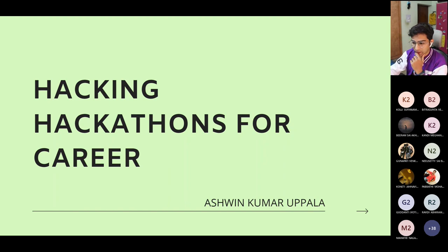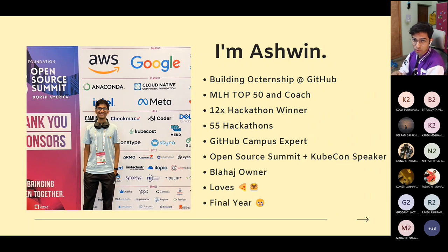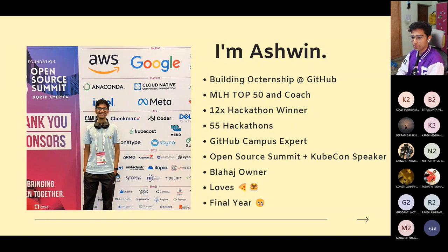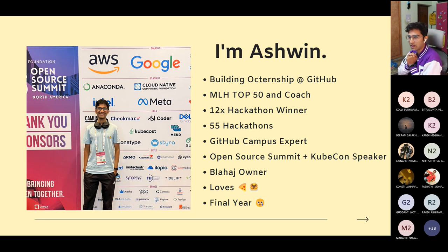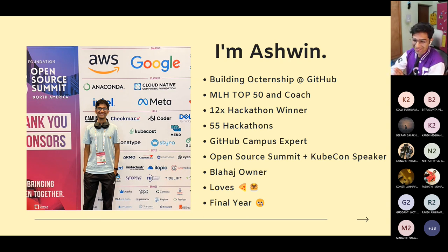Let me introduce myself again. My name is Ashwin Kumar Uppala. I'm currently an incoming intern at GitHub building the Octoships program. I'm also an MLH Top 50 candidate and currently a hackathon coach at Major League Hacking. I love hackathons — I've spent the past two years doing a ton of them. That's how I started my journey in tech and in communities. I'm also a GitHub Campus Expert, a speaker at KubeCon and Open Source Summit, and in my final year of undergrad.